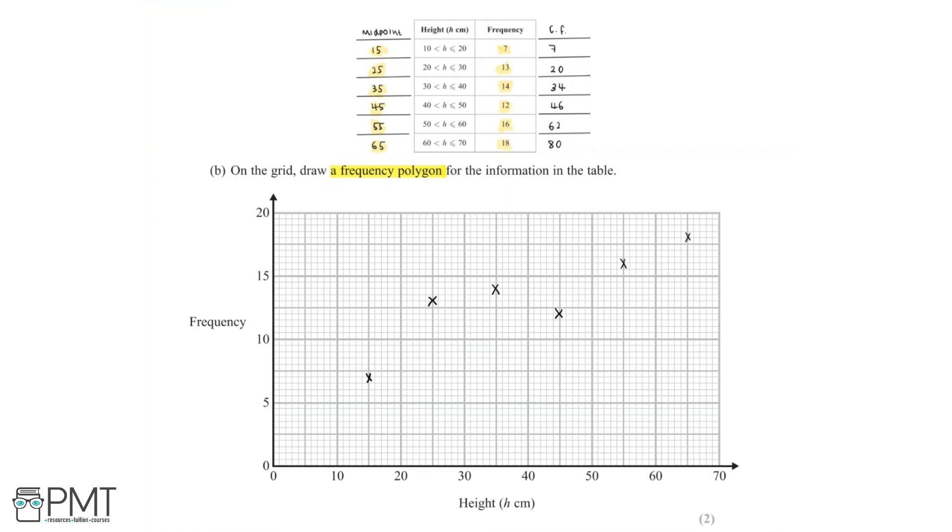Now to complete the frequency polygon, we need to join these points together with straight lines. And so we've now drawn a fully correct frequency polygon that represents the information given to us in the table.